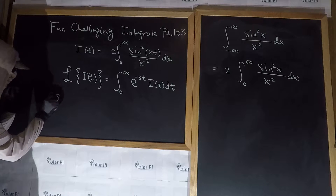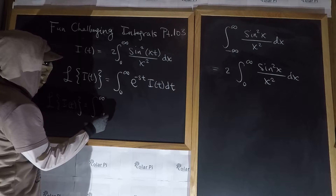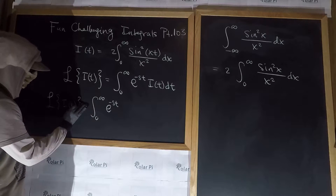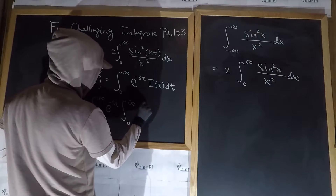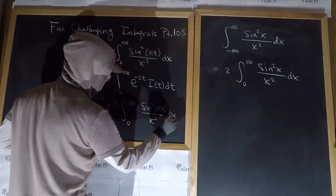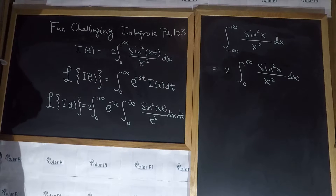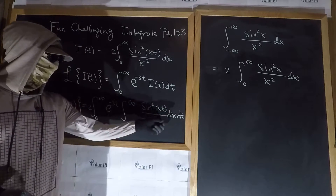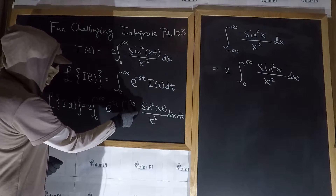That means the Laplace transform of i of t is equal to the integral from 0 to infinity of e to the minus st — and we know i of t is right here — so I'll write the 2 in front of this integral. The rest of i of t is going to be the integral from 0 to infinity of sine squared of xt divided by x squared times dx. But we're doing the Laplace transform of i of t, so I need a dt right here. Notice that as far as integrating with respect to x, e to the minus st is a constant, meaning I could throw e to the minus st inside of this second integral.